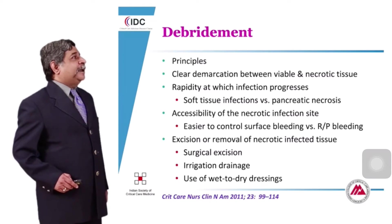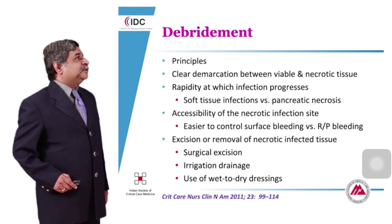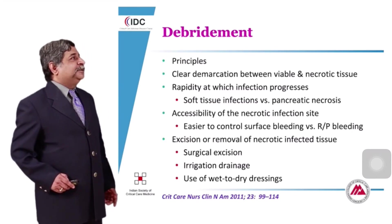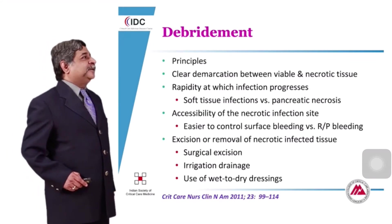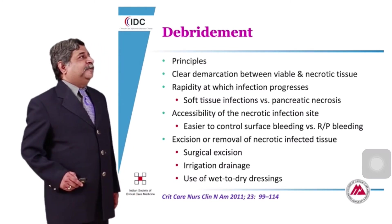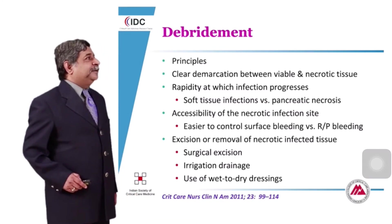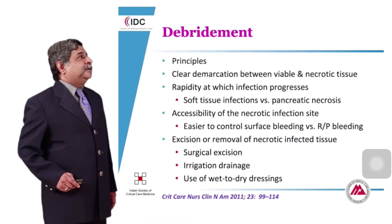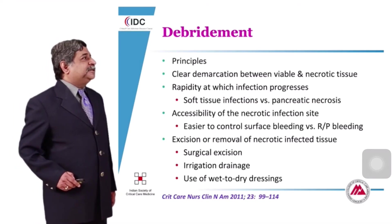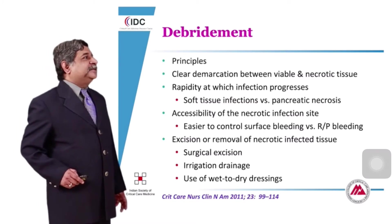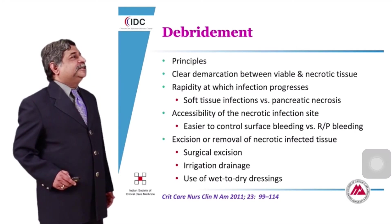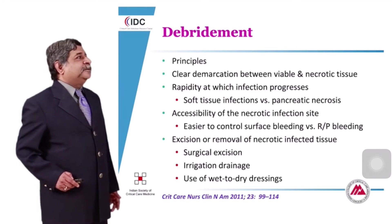Debridement also depends on the rapidity of infection progression. Soft tissue infections progress very rapidly compared to pancreatic necrosis, where demarcation comes much later. Therefore, in pancreatic necrosis, late surgery is preferred, whereas in soft tissue infections, immediate debridement is indicated. The accessibility of the necrotic infection site also matters — in soft tissue infections, surface bleeding during debridement can be compressed, but in early pancreatic necrosis, retropancreatic bleeding is difficult to control.